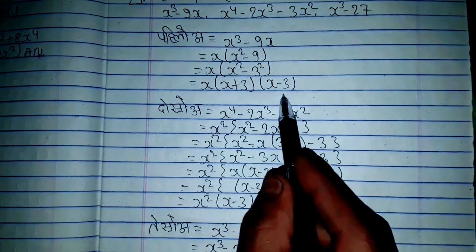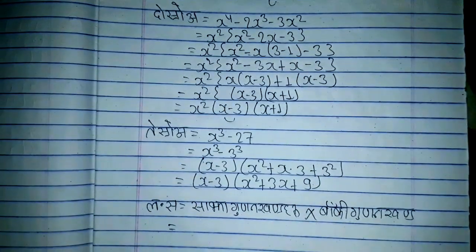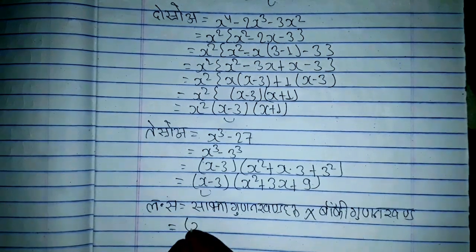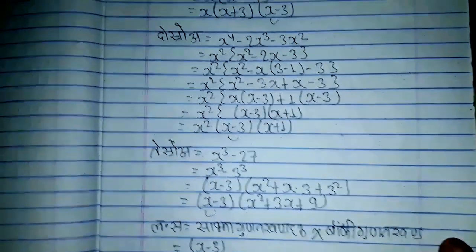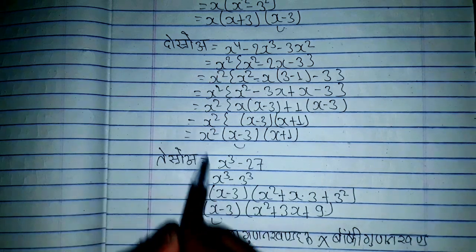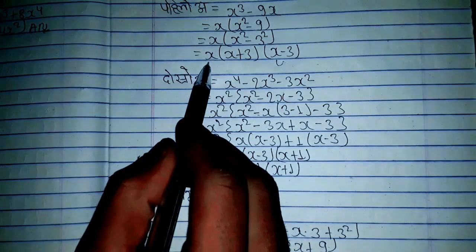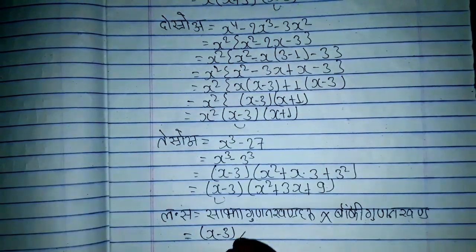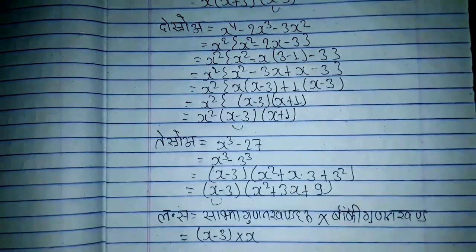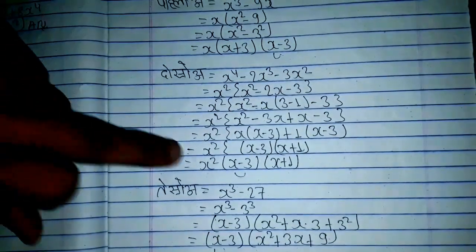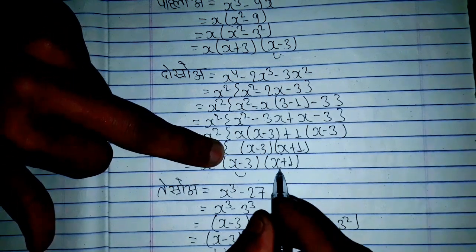The factor x minus 3 appears here, then x minus 3, then x minus 3 again. So we have x minus 3 three times. Then x minus 3, giving us x minus 2 times x minus 3.